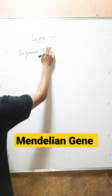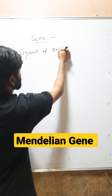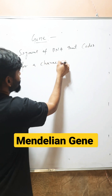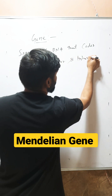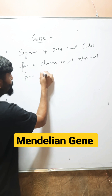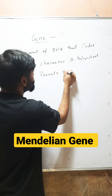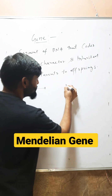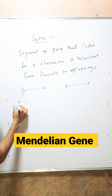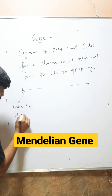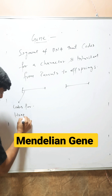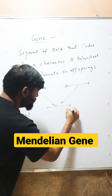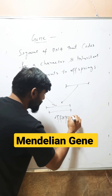A gene is a segment of DNA that codes for a character and is inherited from parents to offspring. For example, this segment of DNA codes for height — that is a character — and this segment is inherited from parents to offspring.